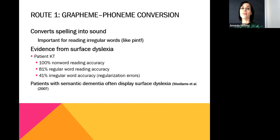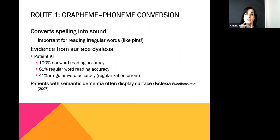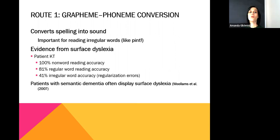Damage to route one leads to surface dyslexia. There's also a type of dementia called semantic dementia — people with difficulty understanding word meanings — and those patients also display surface dyslexia. Route one is rule-based in nature, based on previous exposure: you have the rule that P-I-N-T makes the sound 'pint,' stored in route one so you can convert it easily.